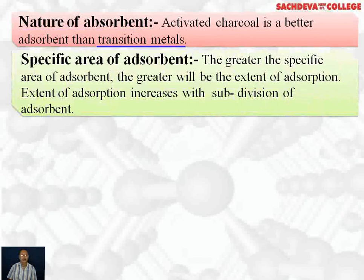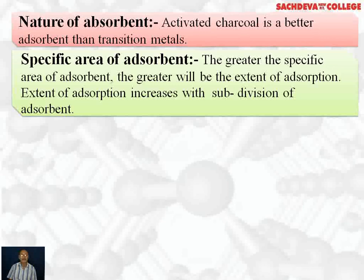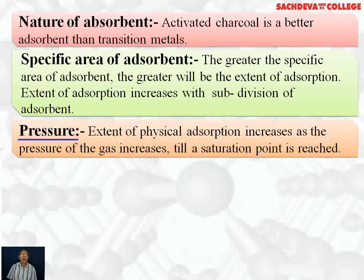Nature of adsorbent: activated charcoal is a better adsorbent than transition metals because activated charcoal has more active sites where adsorption can take place. Specific area of adsorbent: the greater the surface area of the adsorbent, the greater will be the extent of adsorption. The extent of adsorption increases with the subdivision of the adsorbent — that is why catalyst is used in finely divided state, as finely divided state provides more specific area and greater extent of adsorption.